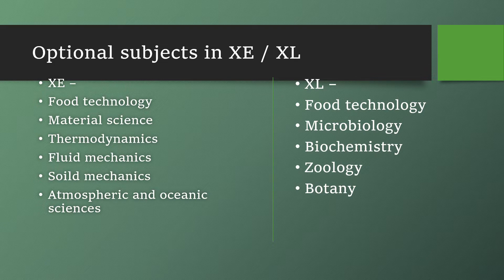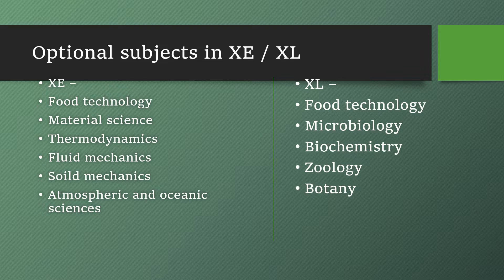For XE, Food Technology has been added as an optional third subject, but since you are a food technology graduate or student, you should take it as your third subject. The fourth optional subject can be chosen from material science, thermodynamics, fluid mechanics, solid mechanics, or atmospheric and oceanic science — depending on your interest. Similarly in XL, the third subject becomes Food Technology and the fourth can be chosen from microbiology, biochemistry, zoology, botany, etc.